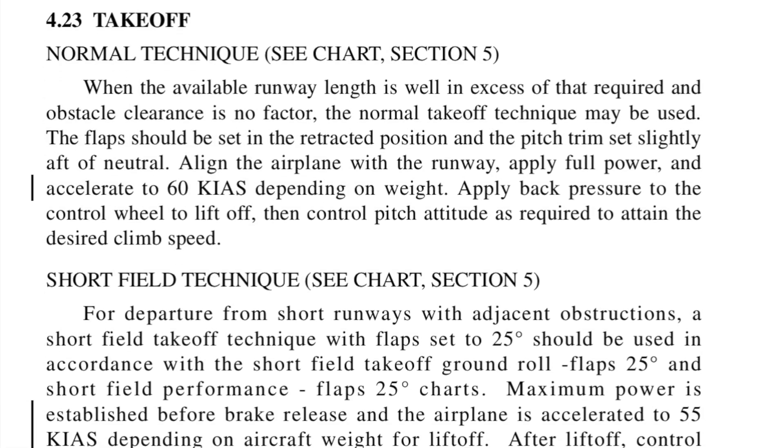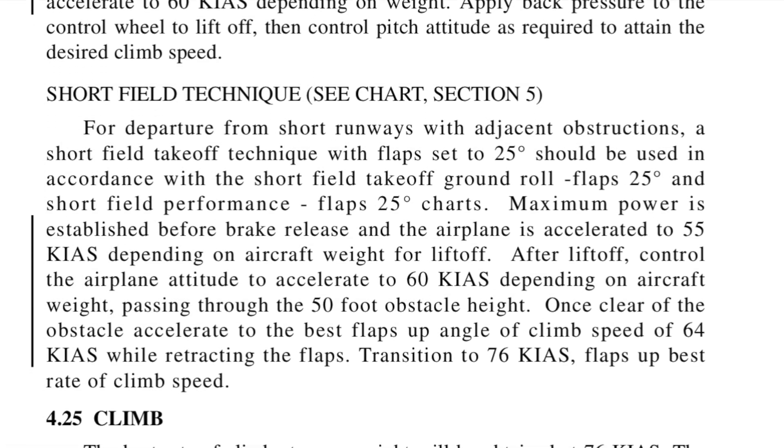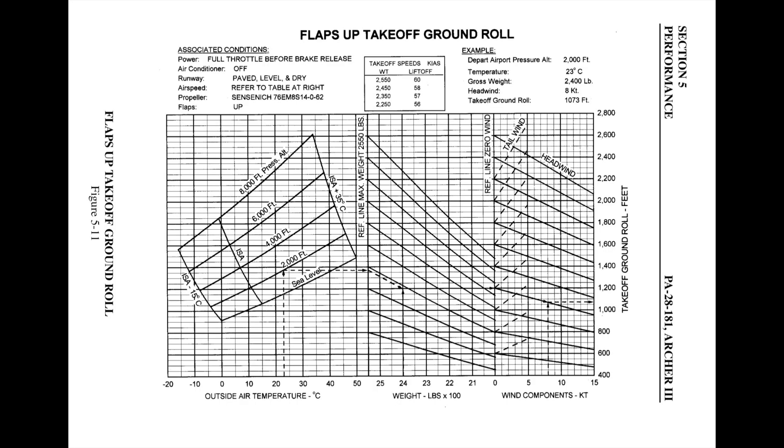Let's find out if we'll be able to safely take off and head back to Provo, or if we'll need to find something else to do in lovely Fairfield, Utah. First, let's read the takeoff procedures description in Chapter 4 of the POH to get a feel for our options. Then we'll use that information and the runway description to determine which takeoff chart to use. We know the runway is a paved strip and there are no tall obstacles at the end, so we'll use the flaps-up takeoff ground roll performance chart.